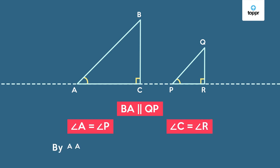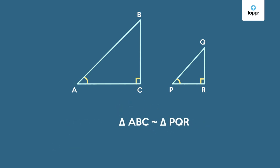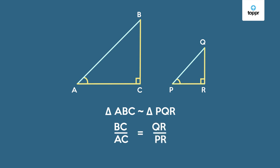So by the angle angle or AA postulate, the two triangles are similar. And because they are similar, the ratio between their sides, that is BC by AC and the sides QR by PR, is the same. And this property is of similar triangles that you've already seen before.